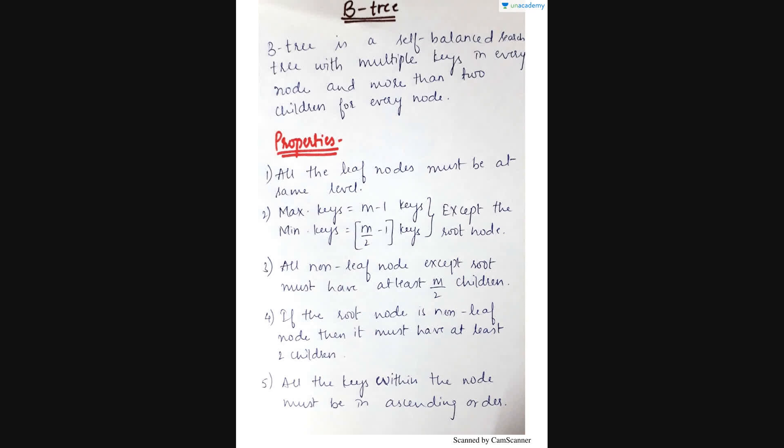All the leaf nodes must be at the same level. A leaf node is a node which has no further children nodes. Maximum keys equal to m-1 keys and minimum keys equal to m/2-1 keys, except for the root node. All non-leaf nodes except the root node must have at least m/2 children. If the root node is a non-leaf node then it must have at least 2 children. All the keys within the node must be in ascending order.